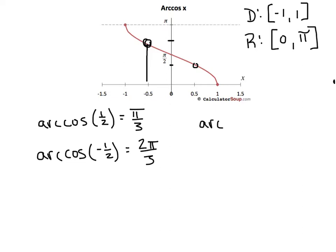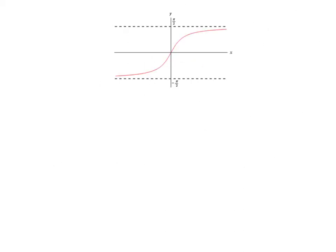If we wanted arc cosine of 1, the angle is 0. If we wanted arc cosine of negative 1, the corresponding angle would be π. My favorite inverse trig graph by a mile is the arc tangent graph, and I believe it's the most popular one on the AP exam. If you had to be an expert on just one of these three, I would recommend arc tangent.